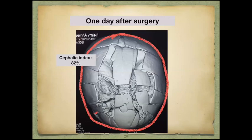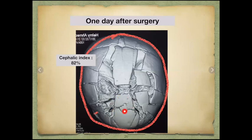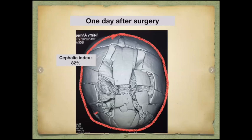This 3D CT scan done one day after surgery shows the holes where we applied our suture, and the skull is now very broad because we pulled from anterior to posterior — the skull is shorter and the brain moved laterally, with significant expansion in that area. This child had a cephalic index in the 60s, and one day after surgery, we now have a cephalic index of 82%, which is excellent.